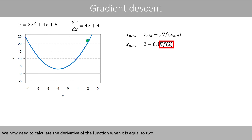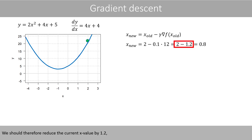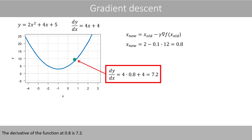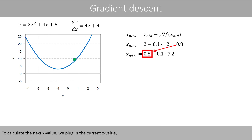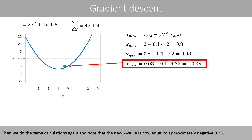We now need to calculate the derivative of the function when x is equal to 2. We set x to 2 in this equation and do the math. We see that the derivative of the function when x is equal to 2 is 12. We should therefore reduce the current x value by 1.2, which means that the new x value should be equal to 0.8. The derivative of the function at 0.8 is 7.2. To calculate the next x value, we plug in the current x value and the derivative at the current point and do the math. The new x value is therefore 0.08. Then we do the same calculations again, and note that the new x value is now equal to approximately negative 0.35.